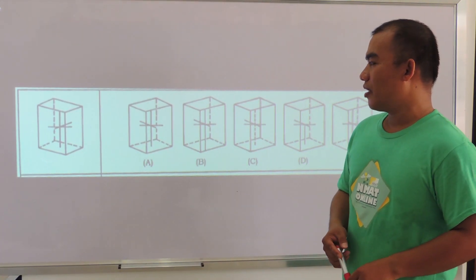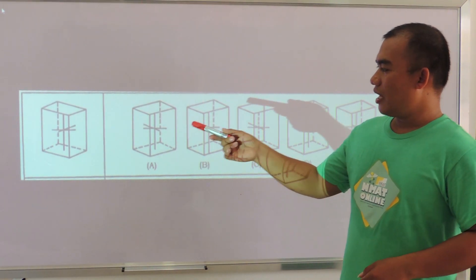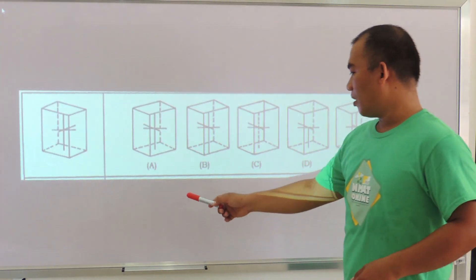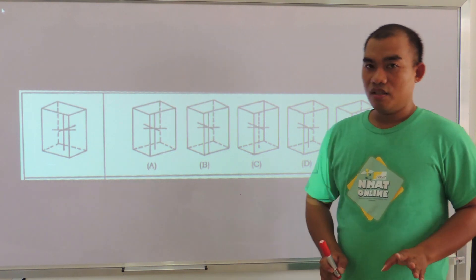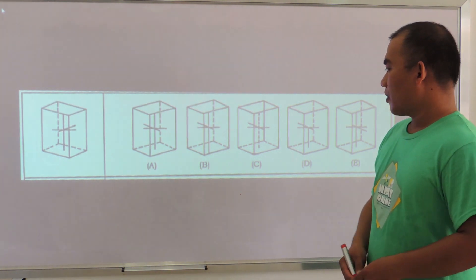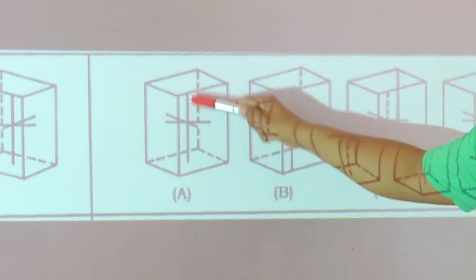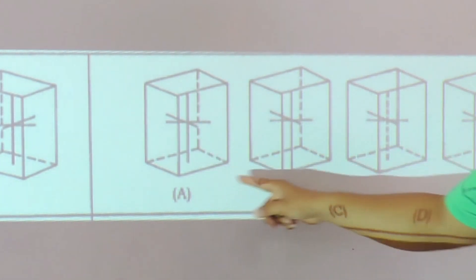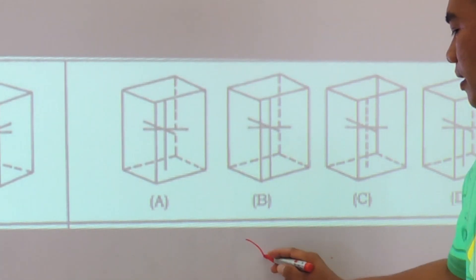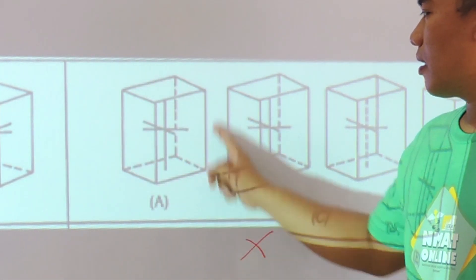Here's one example for the mirror image test. The left side is the original figure, and we need to look for its mirror image among the five options. The strategy is to focus on one part of the figure in the given options from A to E. For example, if I look at the line in the middle, I may eliminate option B.